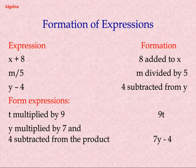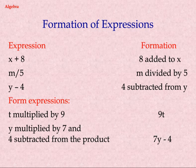Expression Formation. X plus 8: 8 added to X. M slash 5: M divided by 5. Y minus 4: 4 subtracted from Y. From expressions: T multiplied by 9 gives 9T. Y multiplied by 7 and 4 subtracted from the product gives 7Y minus 4.